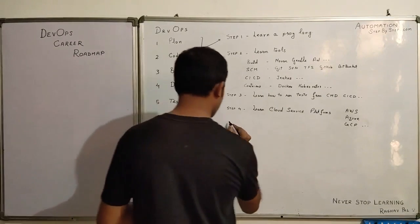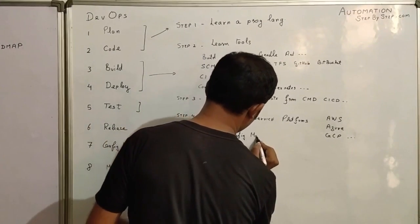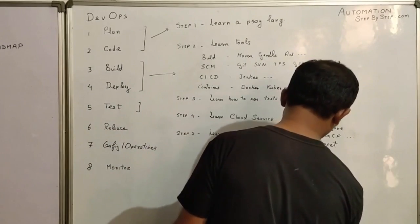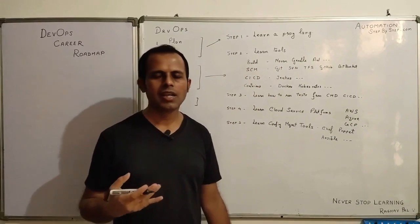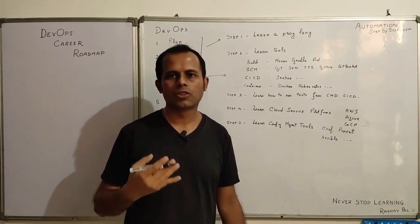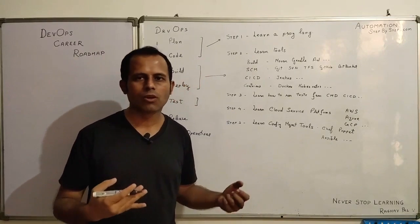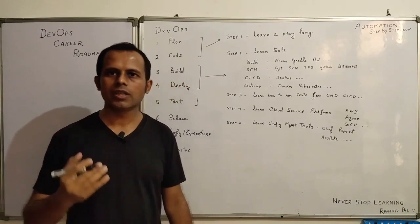Step number five is learn some configuration management tools. These can be Chef, Puppet, Ansible, Saltstack, etc. Based on your interest or based on the need or based on the future prospects, you can learn any one of these or all of these, whatever time you have. Just learn the basics. This is very important.